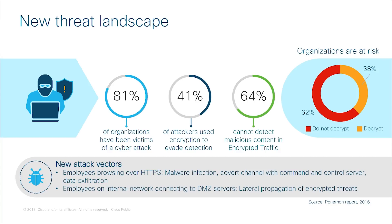Today, companies rely on decryption-based monitoring to analyze encrypted traffic for hidden threats. But it isn't a feasible solution as it is costly, resource-intensive, and compromises data privacy. Also, with the large amount of web traffic being encrypted, it will continue to get more and more difficult to decrypt it. So how do we continue to benefit from HTTPS while avoiding the bad?